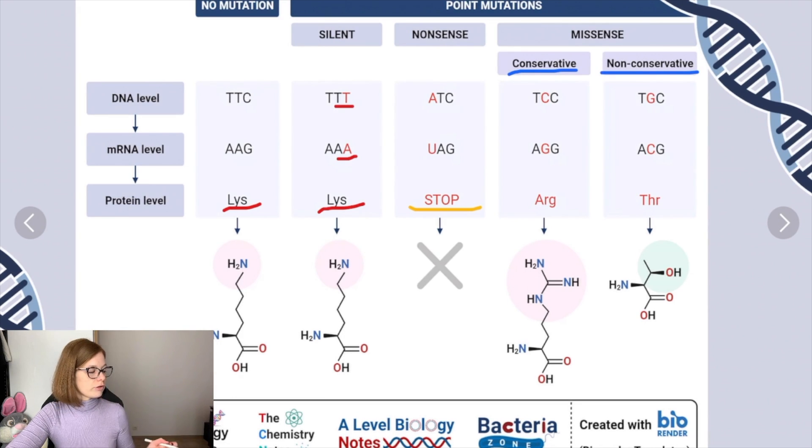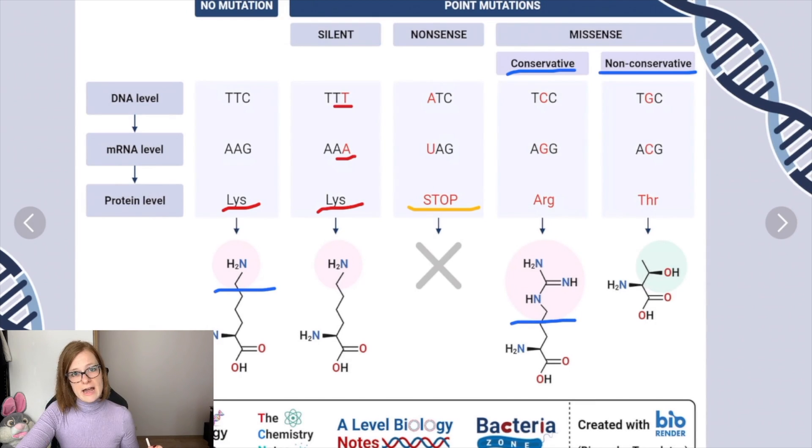Conservative point mutations code for different amino acids but the properties of the changed amino acid are the same as in original. Most proteins can withstand one or two changes like this before their function changes. On the other hand, non-conservative mutation results in change of amino acid with different properties than original. In this case protein may lose its function and cause diseases in organism.